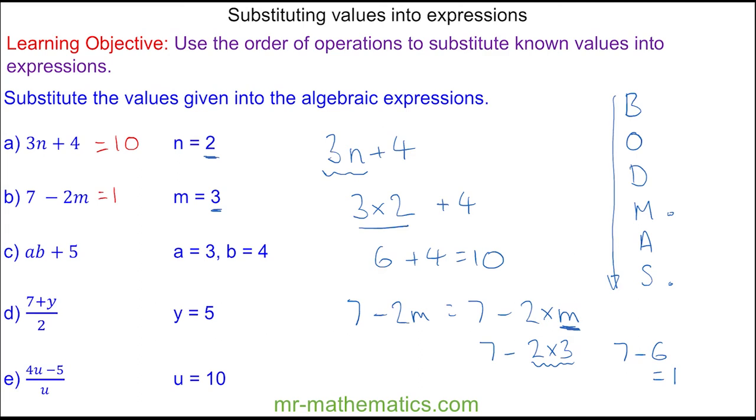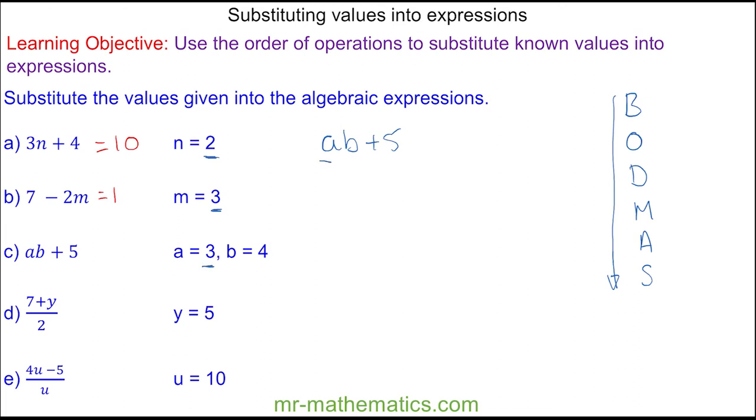For question c, we have ab plus 5. We know that a is 3, so I'll put that in here, multiplied by b, which is 4, plus 5. 3 times 4 is 12, and 12 plus 5 is 17.